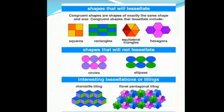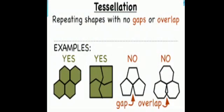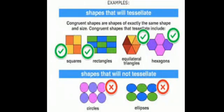Interesting tessellations or tilings. Tessellation is repeating shapes with no gaps or overlap. Look at some examples of shapes that will tessellate and shapes that will not tessellate. Thank you.